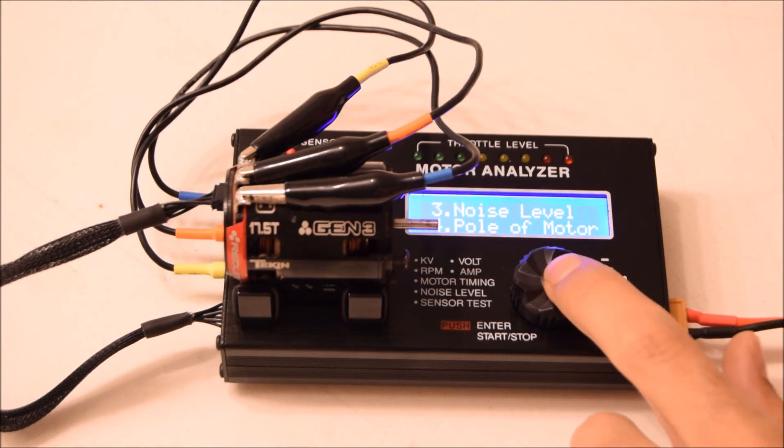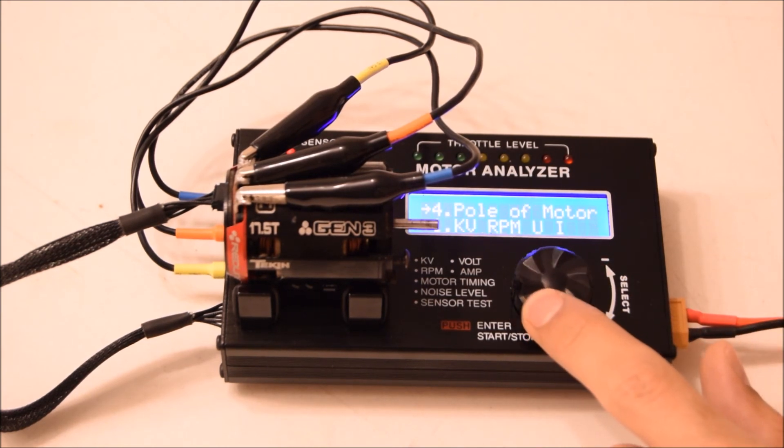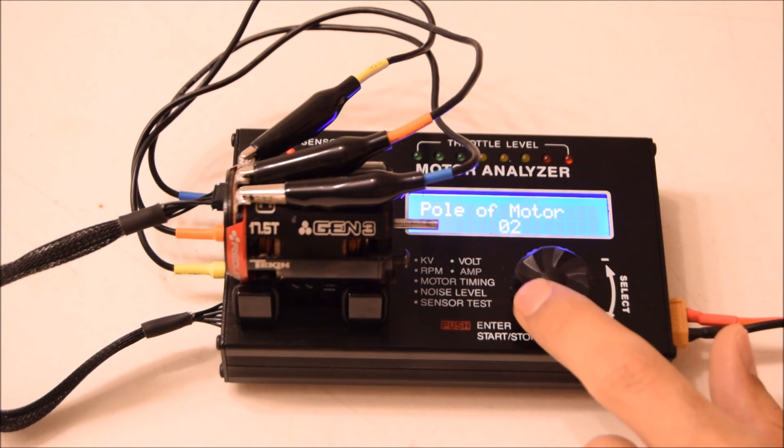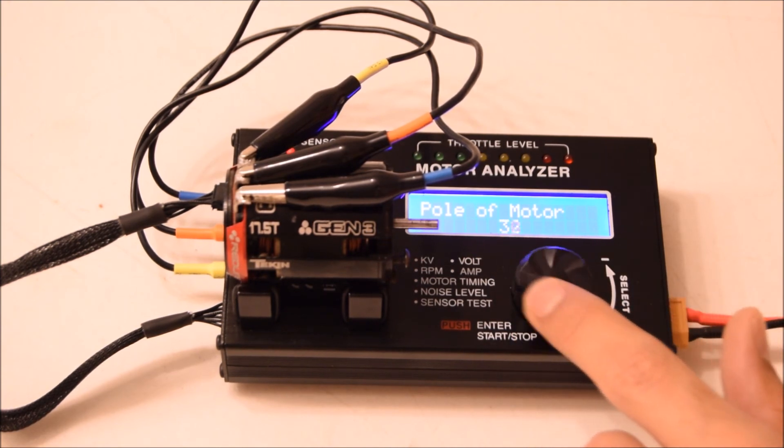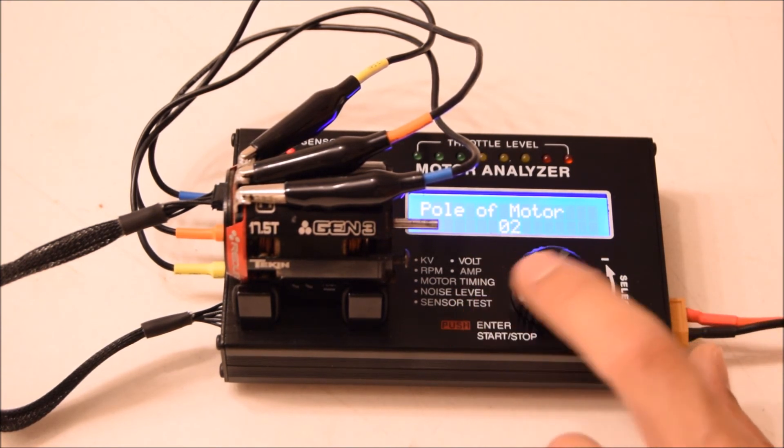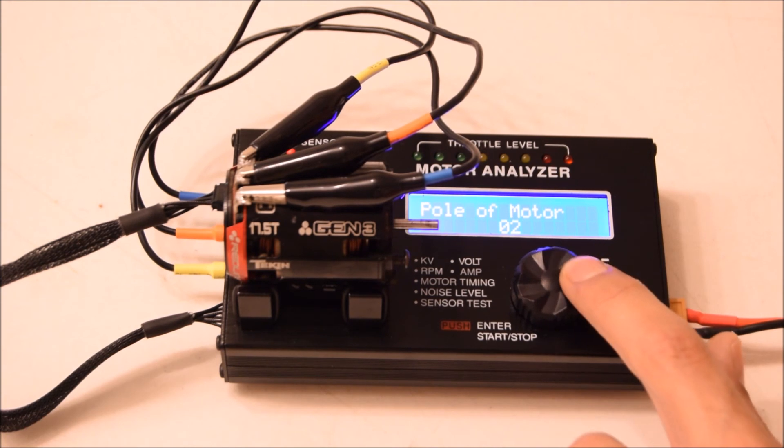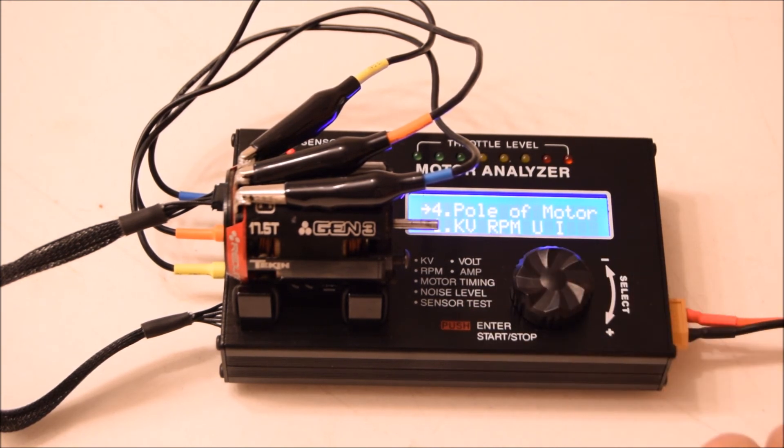The last thing is the motor poles function. If you go into that, it lets you select how many poles your motor has. It goes all the way up to 36. I'll put it back on 2 because that's what I use it for. That's the basic functions of the Sky RC motor analyzer.